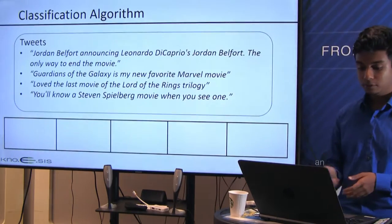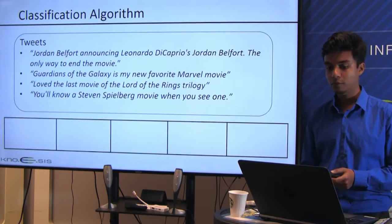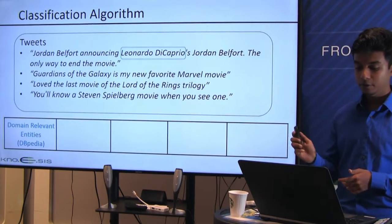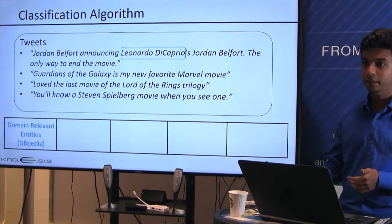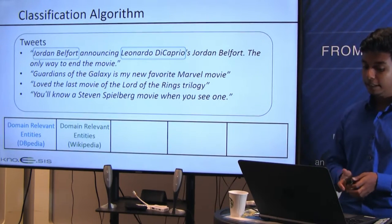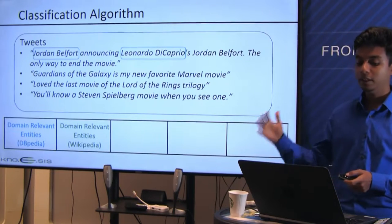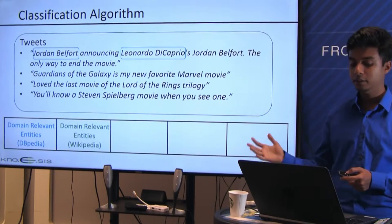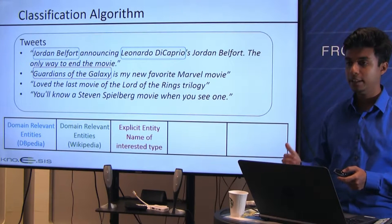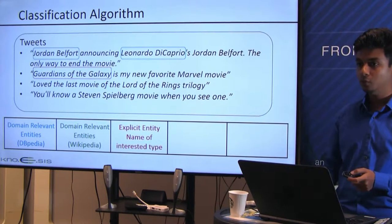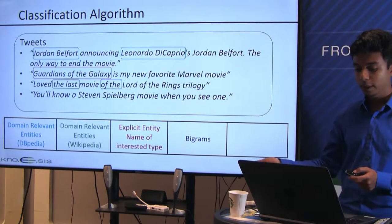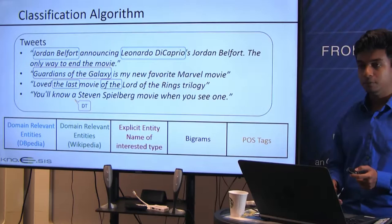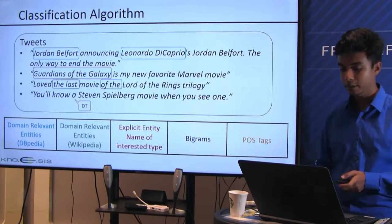To solve this classification problem, we use a set of five features. The first is domain-relevant entities extracted from DBpedia. The second is domain-relevant entities extracted from Wikipedia. The third checks if a tweet has an explicit entity name of the interested entity type. We also use bigrams, and the last feature is POS tags. I'll walk through all of these features in the next slides.